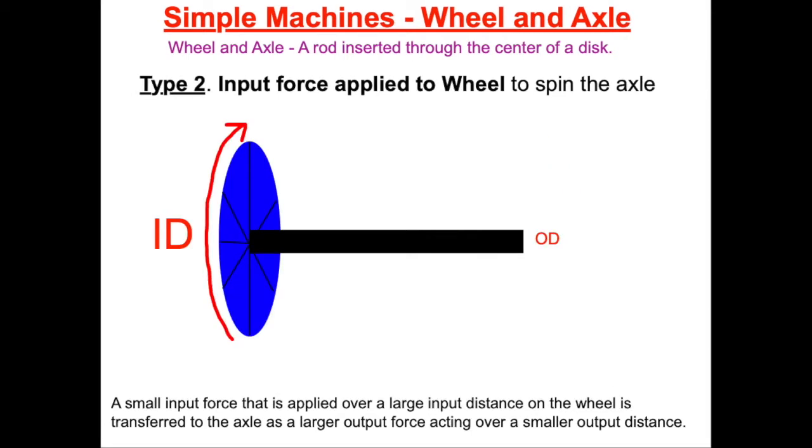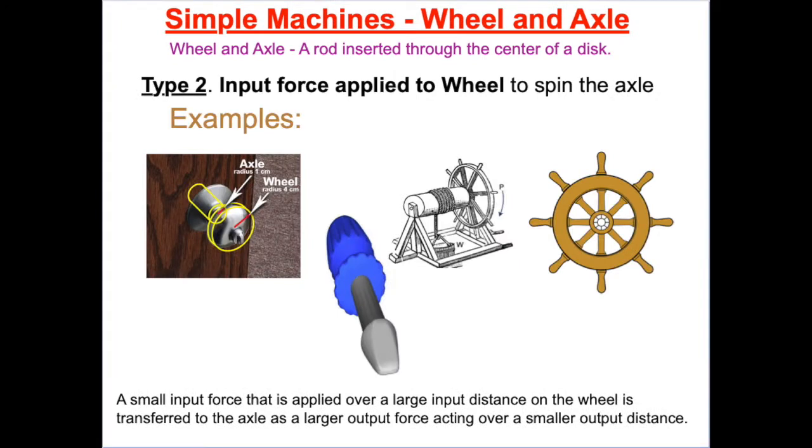Our focus in this activity is applying a force to the wheel and make the axle spin. If the wheel spins half a turn, the axle spins half a turn. This is used in steering wheels and screwdrivers.